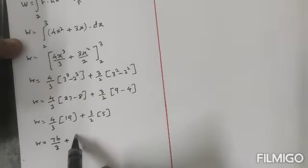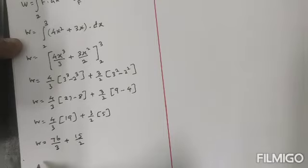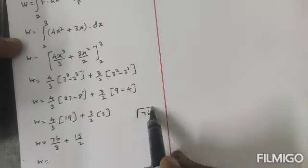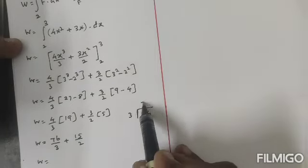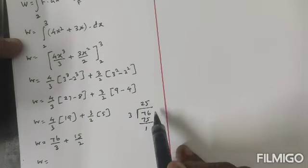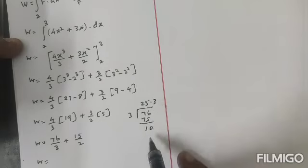4 × 19, that is 76, so 76 divided by 3, plus 3 × 5 = 15, so 15/2. Therefore W = 76/3,